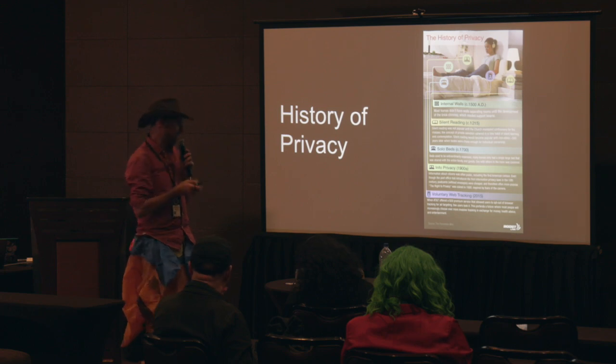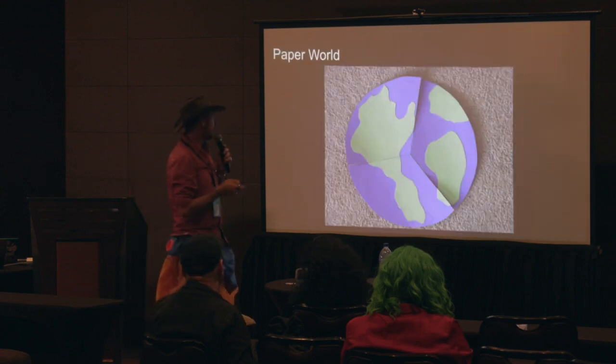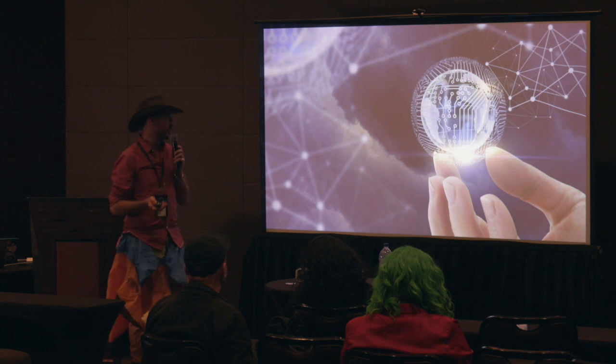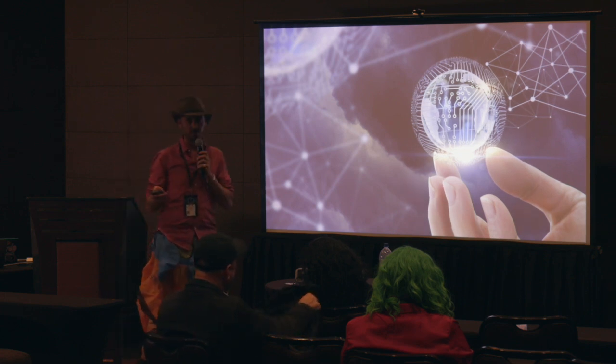Then came solo beds — another big level of privacy around 1700. People used to share one giant bed: your entire family, guests, everyone, all in a bed together. That's pretty awkward. Then information privacy started to become prevalent in the 1900s, and the idea that we can voluntarily opt in or out of web tracking came about for the first time in 2015. But ultimately we are going from living in a paper world to an increasingly digital world.